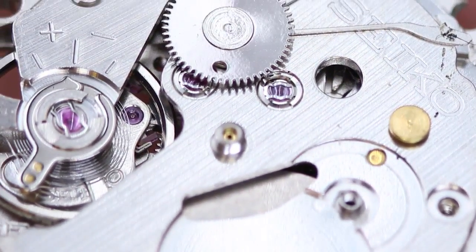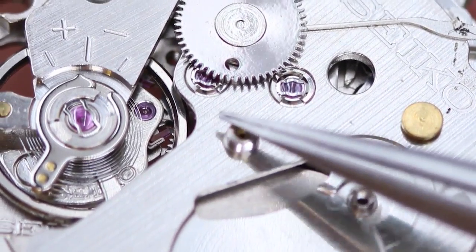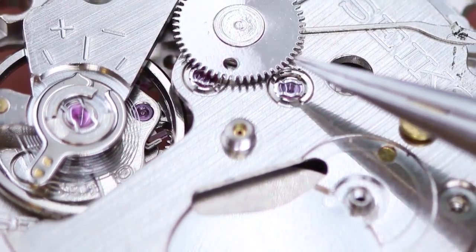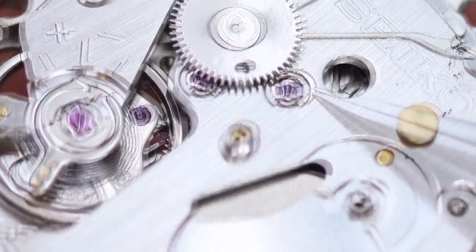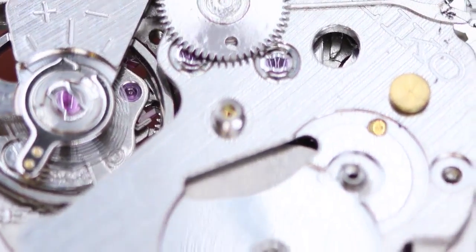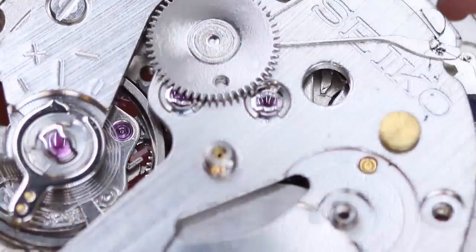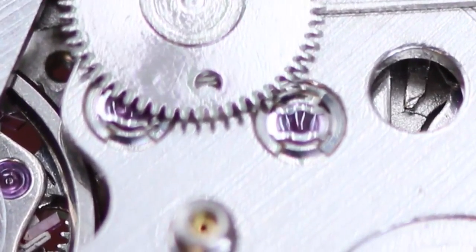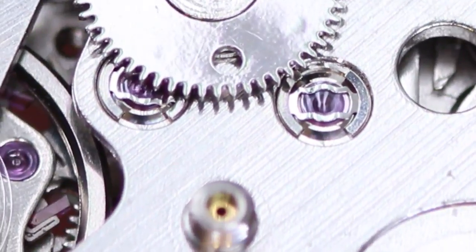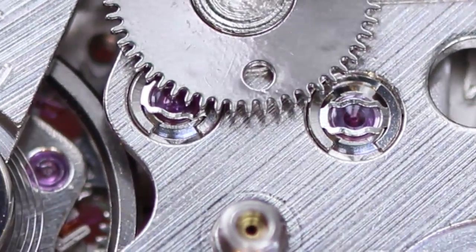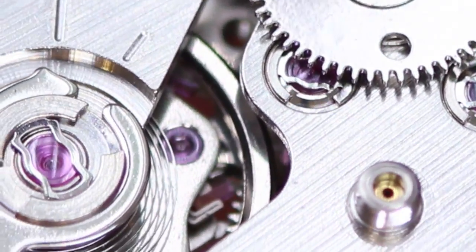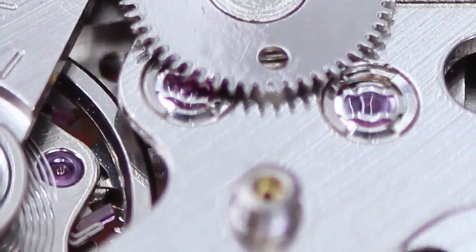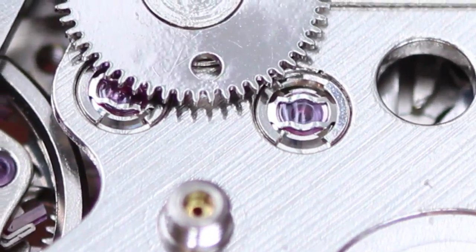Now the second thing pointed out to me was that I didn't show the lubrication of the train wheel shock-protected springs. Now it's actually very difficult to film the removal of these endstones as my big head tends to get in the way of the camera shot. But several people asked, so I've found this 7S26 scrap movement in my box and will attempt to do this without my eyeglass.